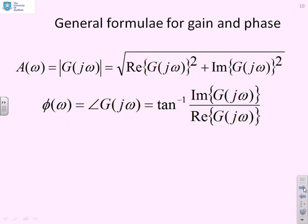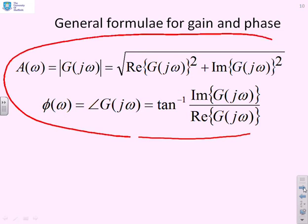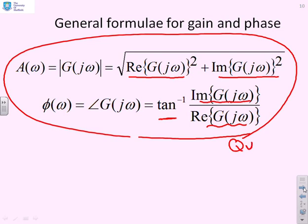The general formulas for gain and phase can be written: A(ω) = |G(jω)| = √(Re{G(jω)}² + Im{G(jω)}²) and φ(ω) = ∠G(jω) = tan⁻¹(Im{G(jω)}/Re{G(jω)}), with a caveat that you must be careful about quadrants because inverse tan is not unique—it only gives you ±90 degrees.